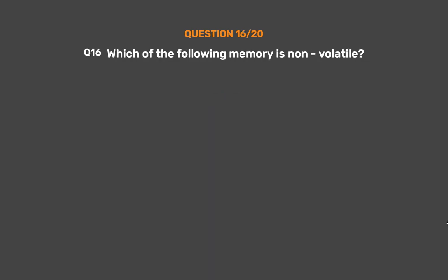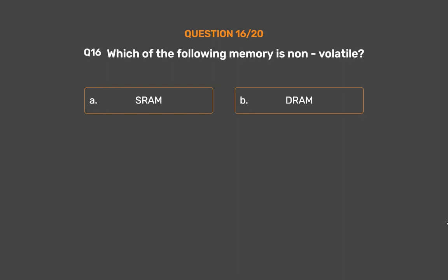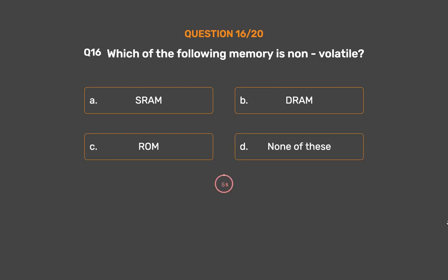Question number 16. Which of the following memory is non-volatile? Option A: SRAM. Option B: DRAM. Option C: ROM. Option D: None of these.